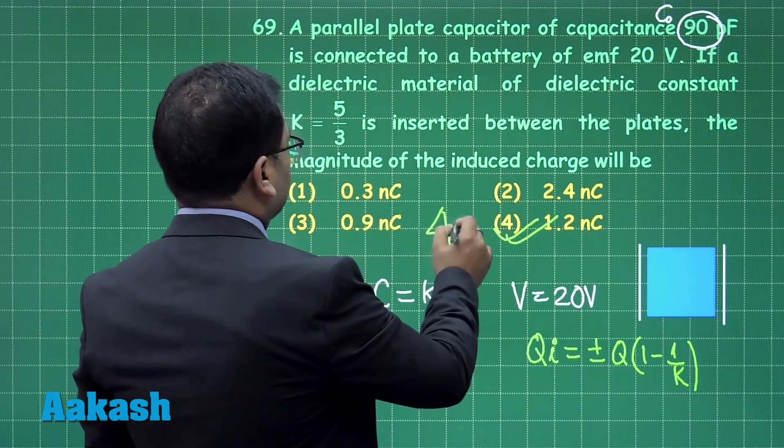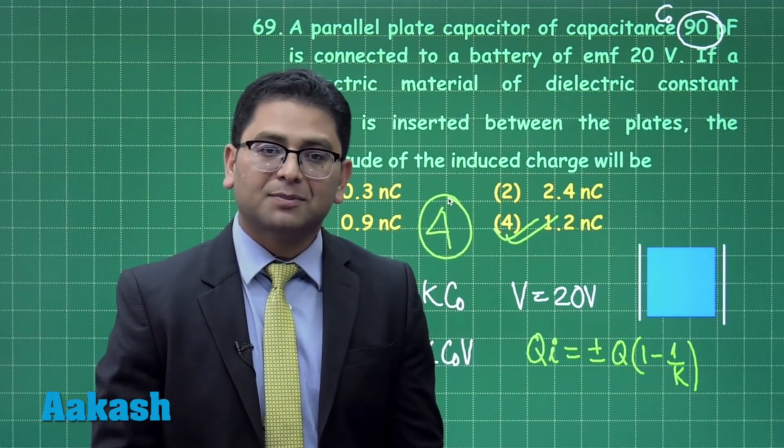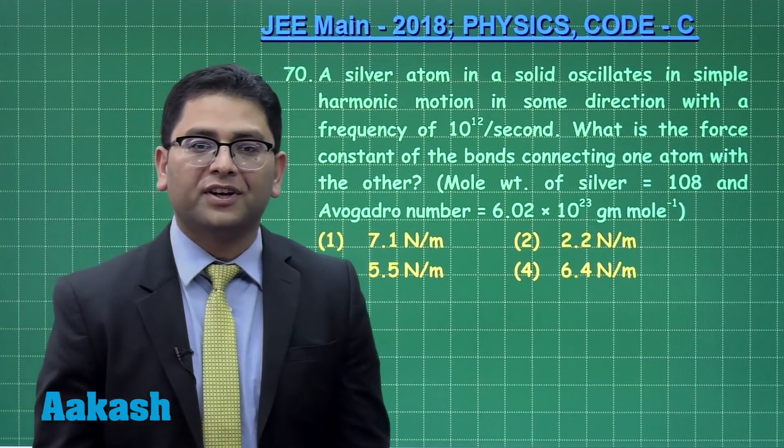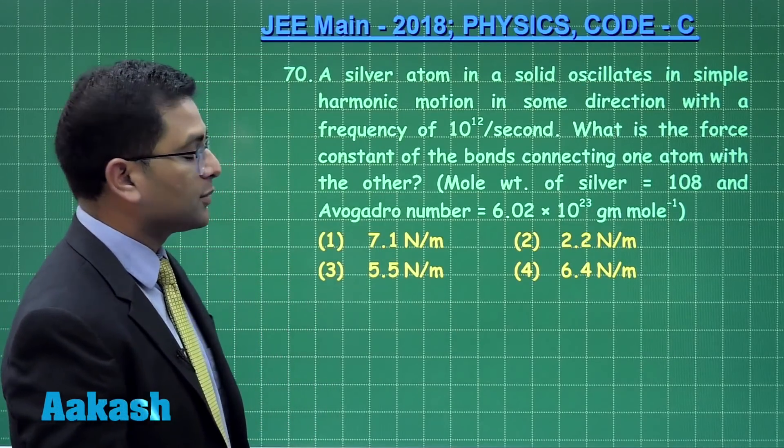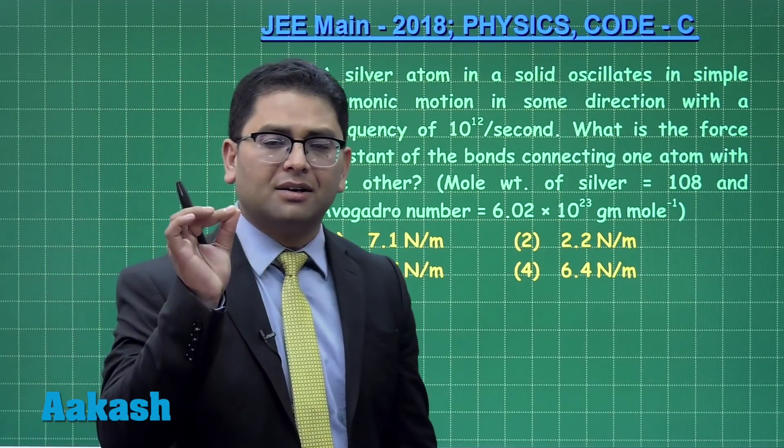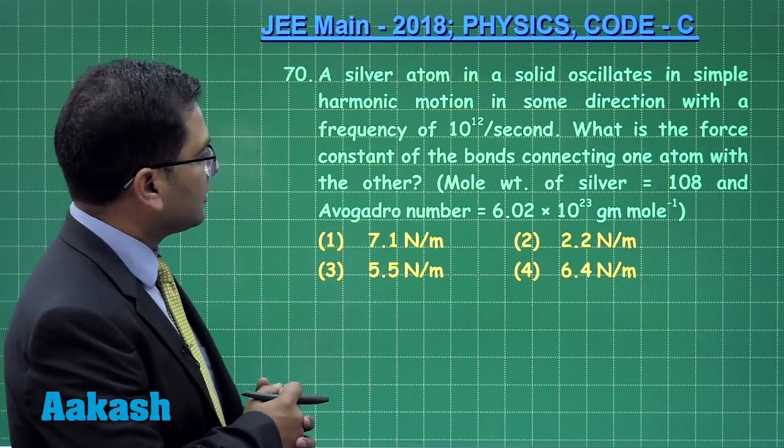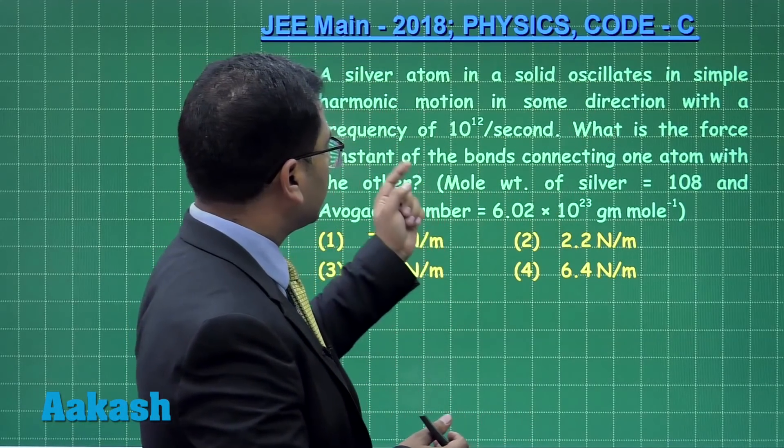As per this, the correct option is option number 4. That was question number 69. Now let's proceed to question number 70. This has been derived from simple harmonic motion with a slight twist given.